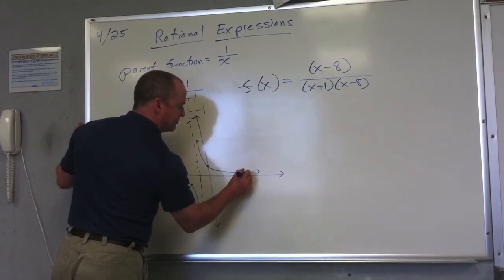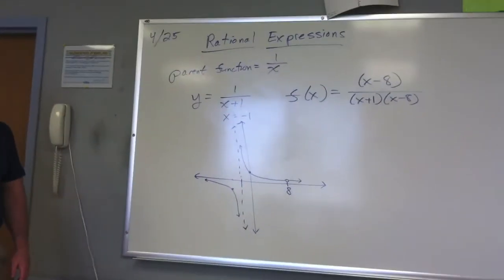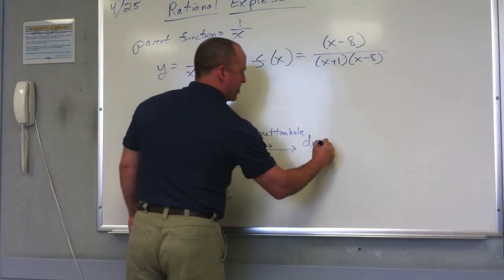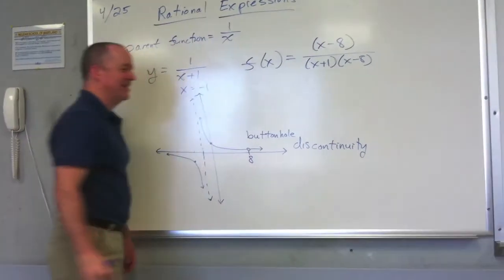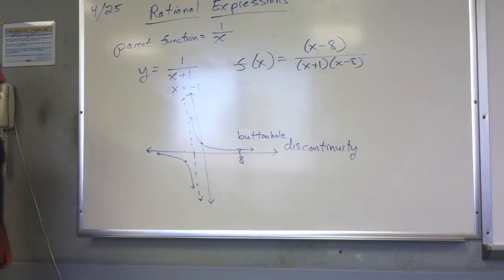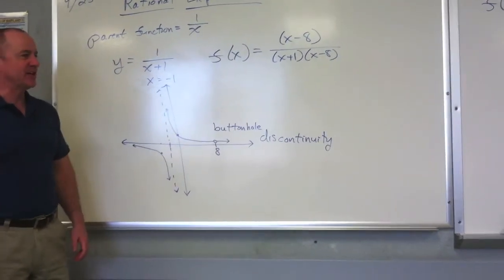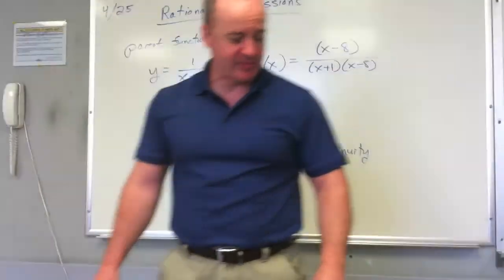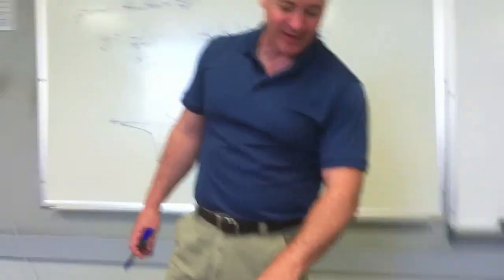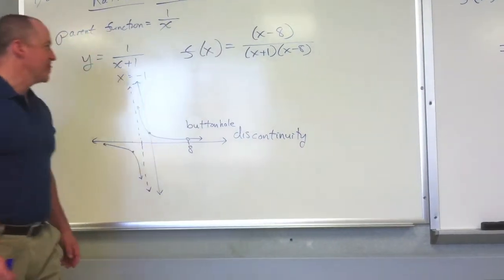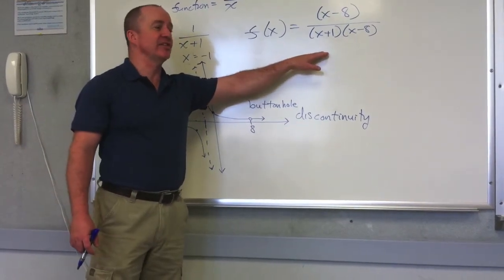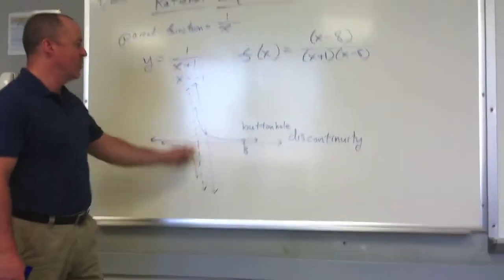Because this came from f of x equals x minus 8 over, in factored form, x plus 1, x minus 8, at the place where we have a 0 over a 0, this function cannot exist. But it doesn't behave as if there's an asymptote there. It just doesn't exist there. So above the 8 on the x axis, we draw a hole. This is what we will later call a buttonhole discontinuity. So this is how you would have to graph this particular situation. For purposes of domain, on this one, this x plus 1 created a vertical asymptote. The x minus 8 over x minus 8 created a buttonhole discontinuity. Both of these are breaks in the domain. You have to account for both of them when talking about your domain restrictions. Only one of them creates a vertical asymptote.